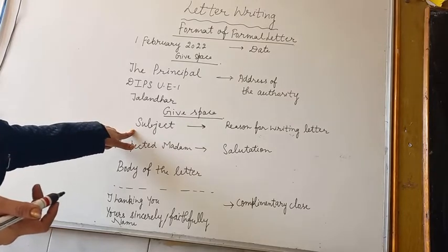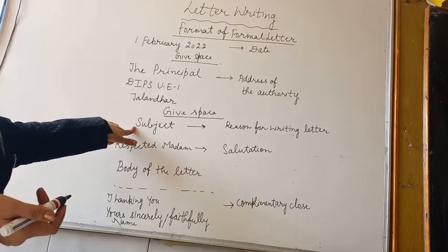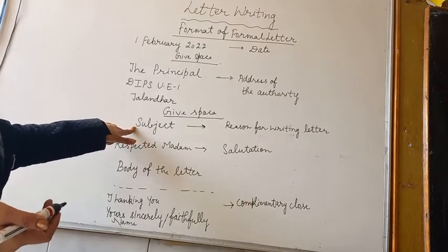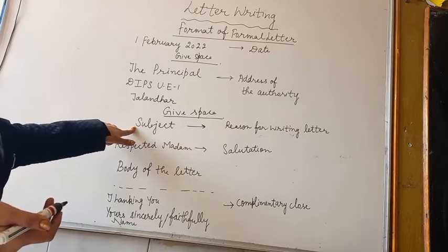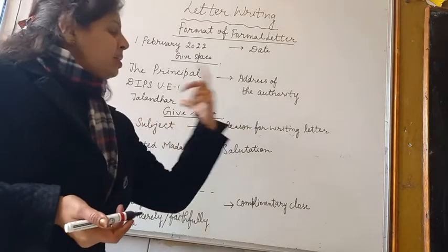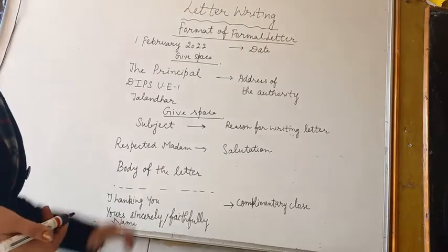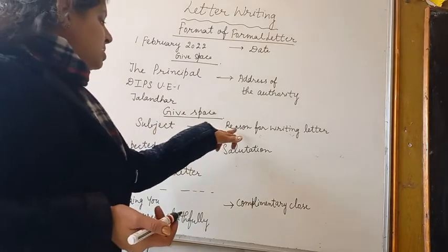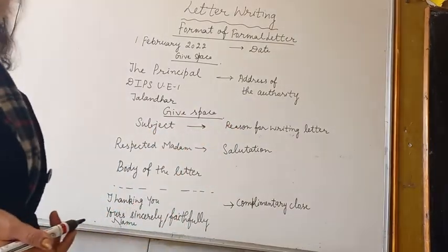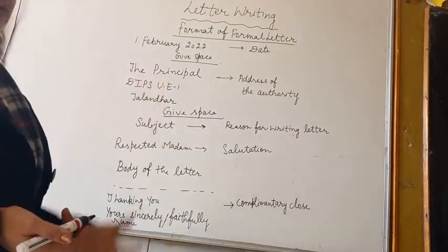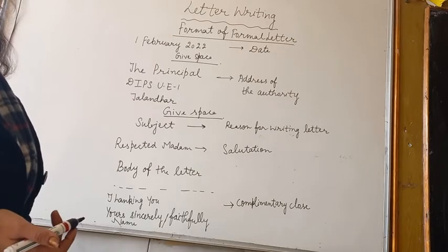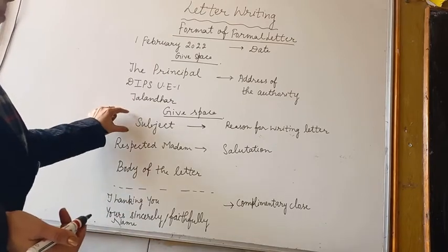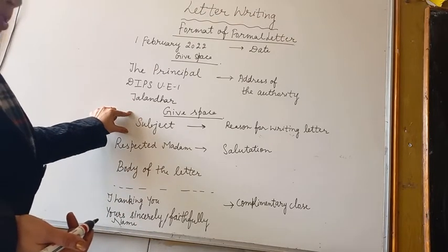Then after that you will write the subject — what is the subject of writing the letter. As you know, the authorized person has to read a number of letters, so when you write the subject it becomes clear from the beginning for what reason you have written the letter. For example, if you want to take leave, you will write a leave application as the subject. So a formal letter includes a subject.